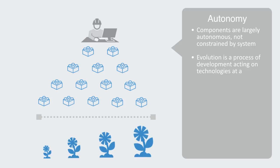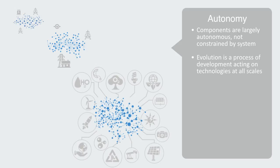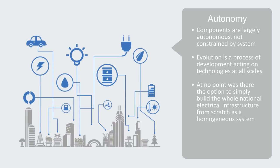Evolution is a process of development that acts on all technologies on all scales. The electrical power grid is a good example. Since its inception in the industrial age, electrical grids have evolved from local systems that served a particular geographical area to wider expansive networks that incorporate multiple areas, typically covering whole nations. At no point was there the option to simply build the whole national electrical infrastructure from scratch as a homogeneous system. The US power transmission grid, for example, consists of about 300,000 kilometers of line operated by approximately 500 companies. And through distributed generation, it is rapidly evolving into a next-generation smart grid that will expand the number of producers drastically — making for many actors acting and reacting to each other's behavior as the entire system evolves over time. It is an example of what is called a complex adaptive system.